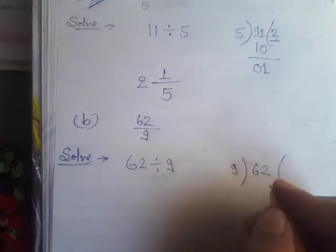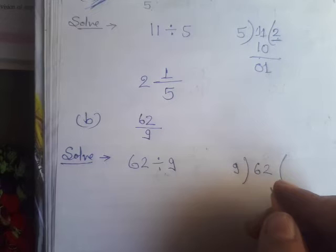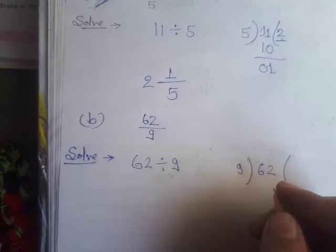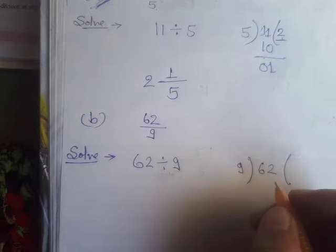So 9 ones are 9, 9 twos are 18, 9 threes are 27, 9 fours are 36, 9 fives are 45, 9 sixes are 54.